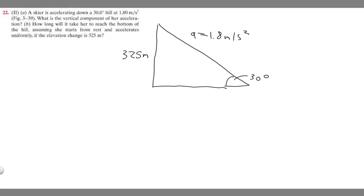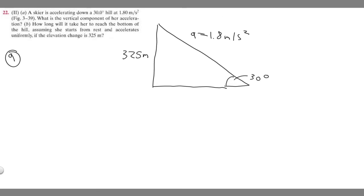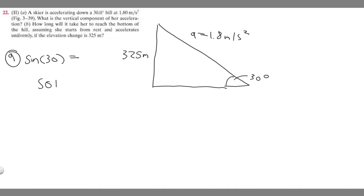Let's start with Part A, which is to find the vertical component. Since we're given a vector — the acceleration of 1.8 meters per second squared — the vertical component is going to be this length right here in terms of acceleration. If you imagine this is a triangle, and you take the sine of the angle they give us, 30 degrees, we know sine is opposite over hypotenuse.